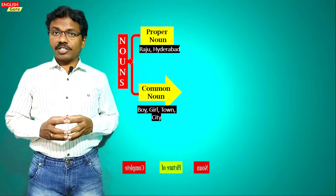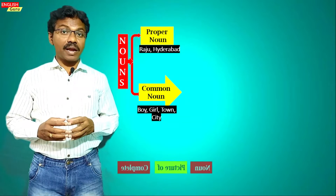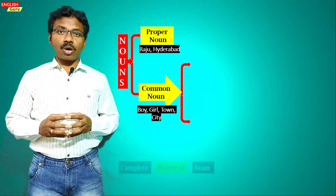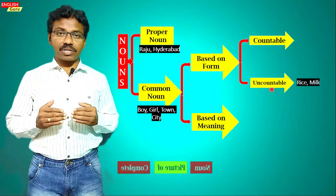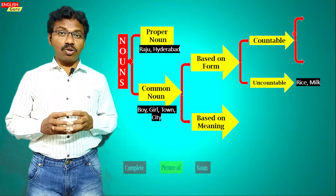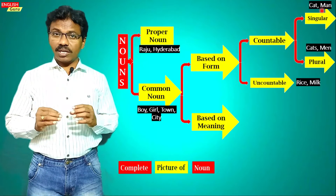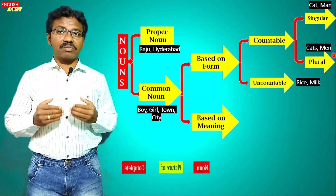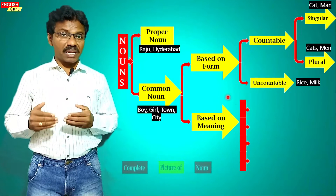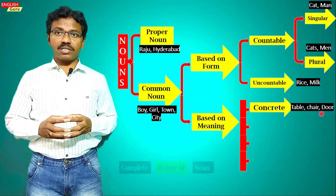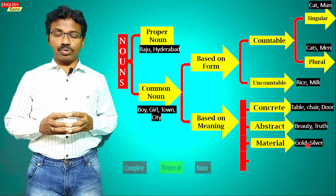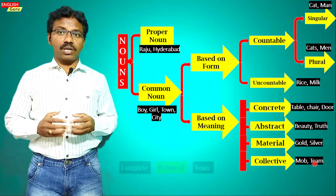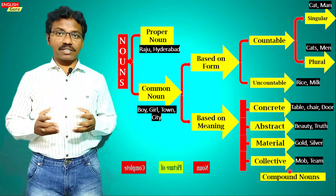Now let us understand the kinds of nouns. Nouns are basically divided into two categories: proper nouns (like Raju, Hyderabad) and common nouns (like boy, girl, town, city). Common nouns are divided by form into countable and uncountable — rice and milk are uncountable. Countable nouns are further divided into singular (cat, man) and plural (cats, men). By meaning, common nouns divide into concrete (table, chair), abstract (beauty, truth), material (silver, gold), and collective (mob, team).